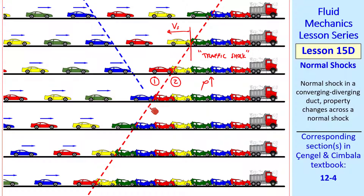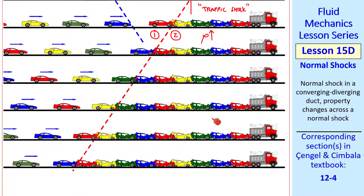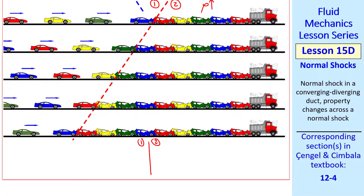Now imagine that you're moving with the shock. In a frame of reference moving with the shock, you'd see the cars moving towards the shock, and the wrecked cars also moving to the right but at a slower speed. This analogy may help you understand what's going on in a normal shock in a gas.